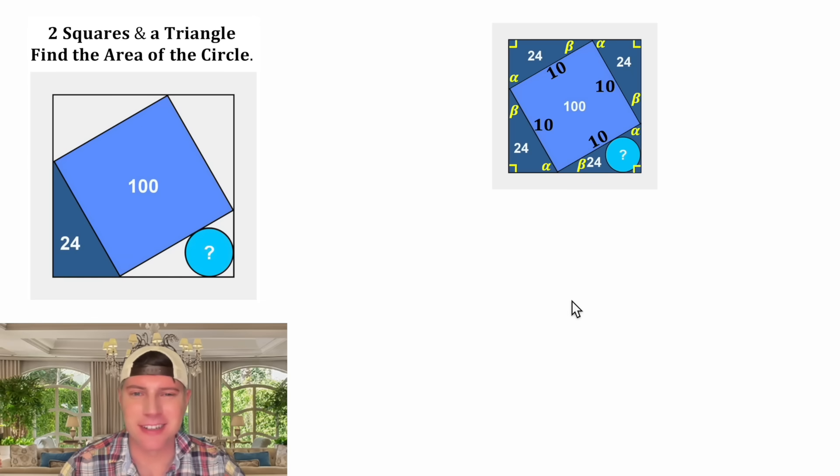Here are all the angles labeled in yellow. Now let's focus on this right triangle. Let's label this side x and this side y, and visually it looks like this side is shorter than this side, so let's assume x is less than y.